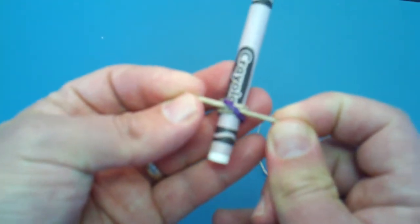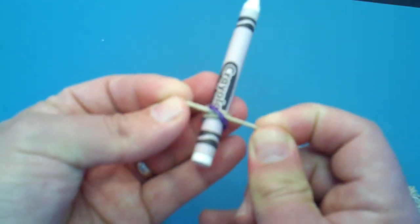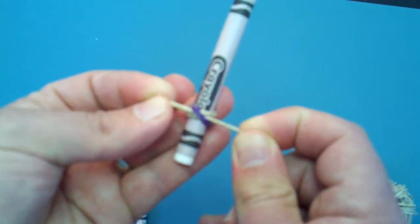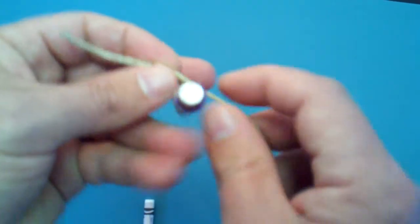So the more you pull on these, the tighter it'll actually tighten, and the better it'll grab itself. Now don't pull so hard you break your string, but that's one of the beautiful things about the clove hitch.